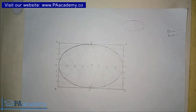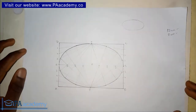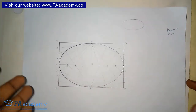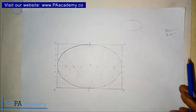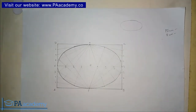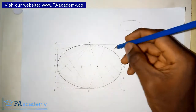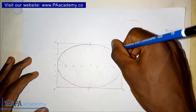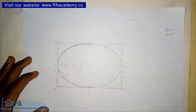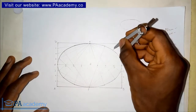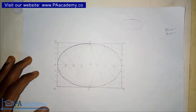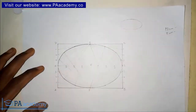Now that we already have the ellipse we're going to be using, what if you are asked to draw a tangent from a given point on the ellipse itself — that means on the curve? Let's pick a point. Let's take this point and call it point T.